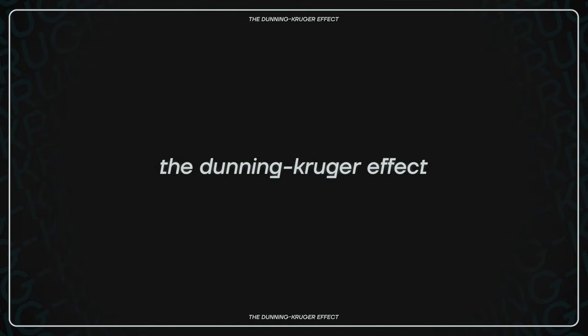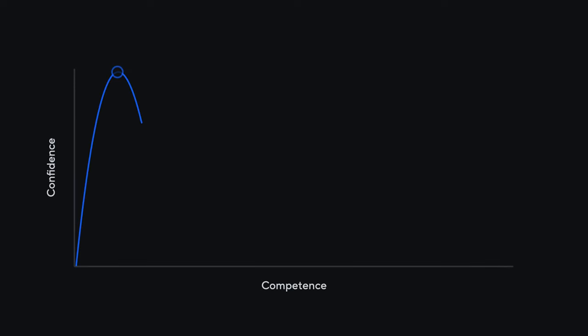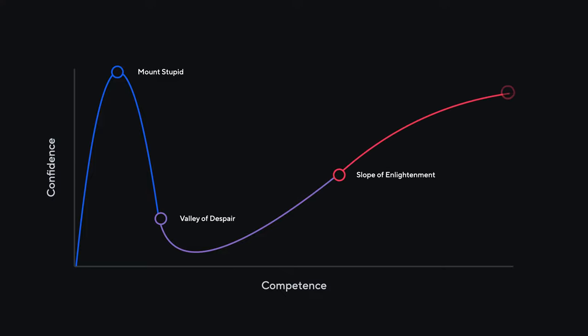I remember seeing a graph several years ago — I'll try to find the image and put it up on screen. Basically, as you start on a project, you begin with increasing confidence. Your x-axis is your knowledge or time spent on something, your y-axis is your confidence. In the very early stages, your confidence goes up and hits a peak pretty early on. Then immediately after that, as you keep going, you hit this really low valley.